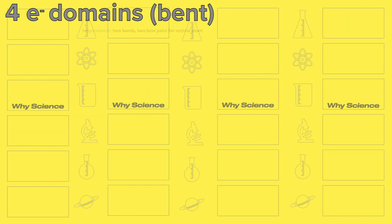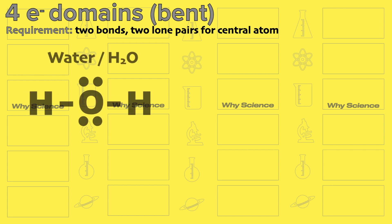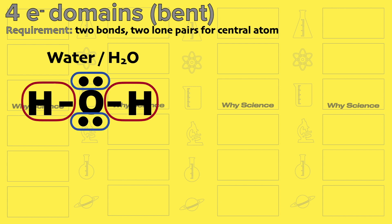Lastly, when you have two bonds and two lone pairs, the molecule should be bent, like in the case of water or H2O, with this Lewis dot structure. Oxygen has two bonds with hydrogen and two lone pairs as well.